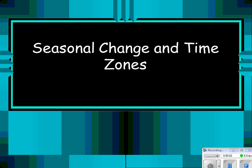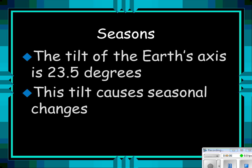These are the seasons and time zones notes. Seasons. The tilt of the Earth's axis is 23 and a half degrees. This tilt is what causes the seasonal changes.